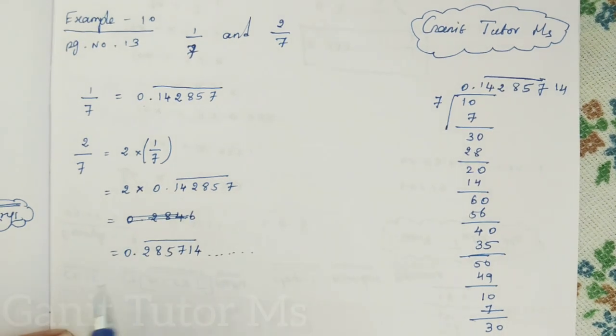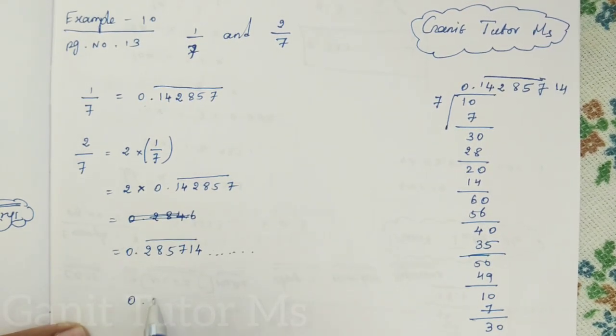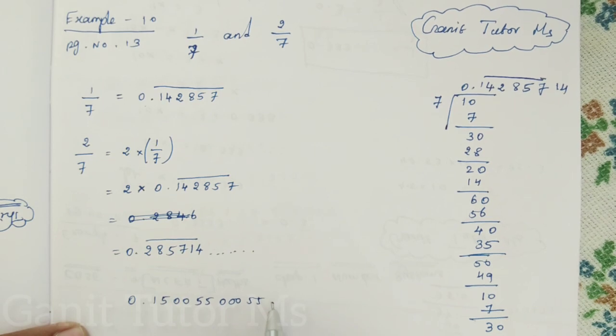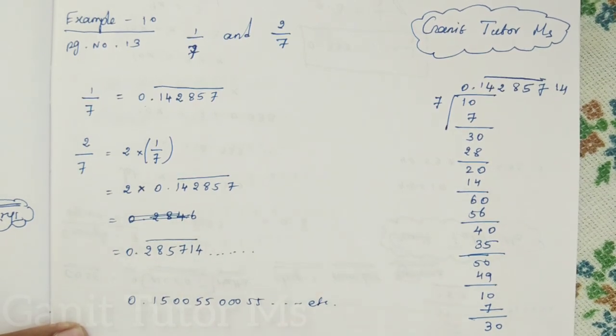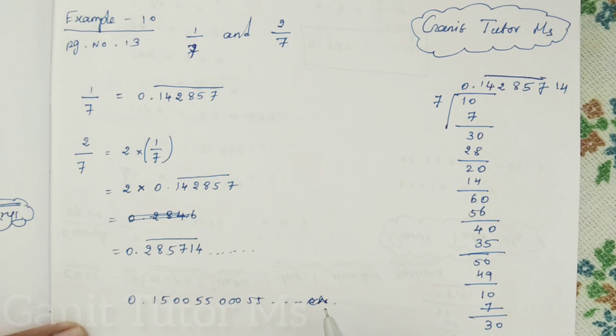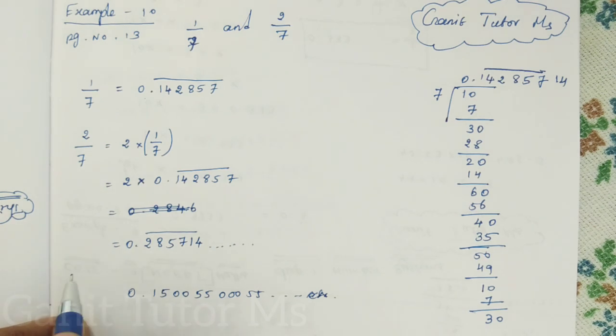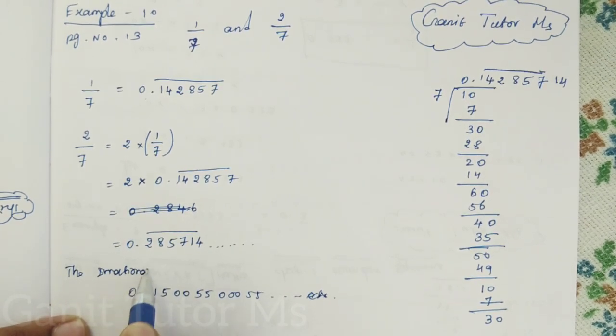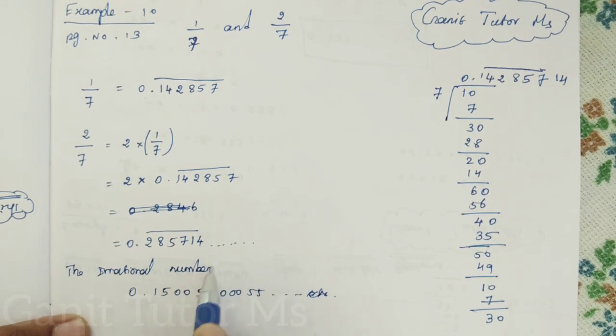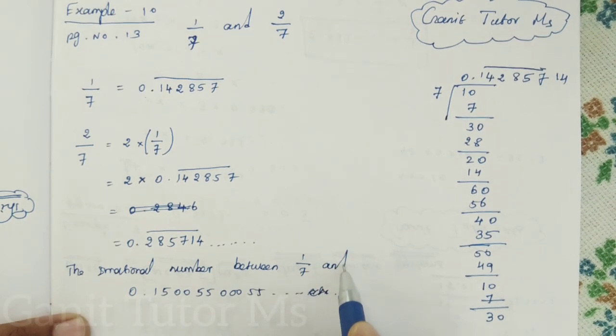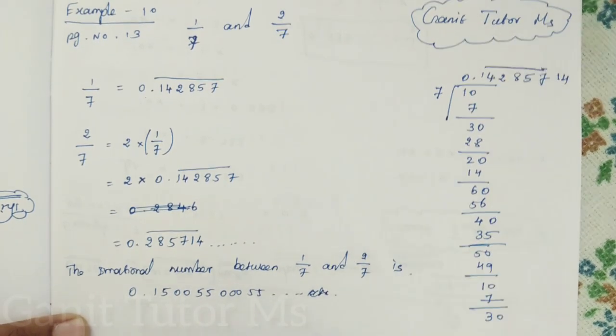So no problem. Therefore the irrational number is you can write 0.1500550005500055 you can write etc. Actually they are asking irrational number. So after that all the decimals should be inside only right? So it is a decimal number between 1 by 7 and 2 by 7. So therefore the irrational number between 1 by 7 and 2 by 7 is this one.